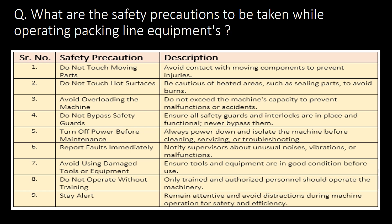What are the safety precautions to be taken while operating packing line equipments? Important safety precautions are: do not touch moving parts, do not touch hot surfaces, avoid overloading of the machine, do not bypass safety guards, turn off power before maintenance, report faults immediately, avoid using damaged tools or equipment, do not operate without training, and stay alert.